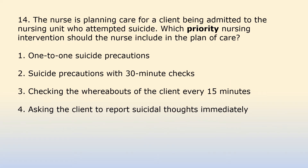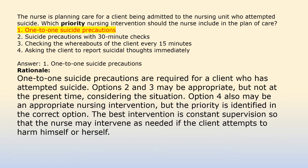The nurse is planning care for a client being admitted to the nursing unit who attempted suicide. Which priority nursing intervention should the nurse include in the plan of care? Option 1: One-to-one suicide precautions. Option 2: Suicide precautions with 30-minute checks. Option 3: Checking the whereabouts of the client every 15 minutes. Option 4: Asking the client to report suicidal thoughts immediately. Answer 1: One-to-one suicide precautions are required for a client who has attempted suicide. Options 2 and 3 may be appropriate but not at the present time. Option 4 may also be appropriate, but the priority is constant supervision so that the nurse may intervene as needed if the client attempts to harm himself or herself.